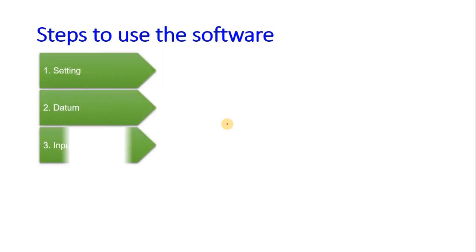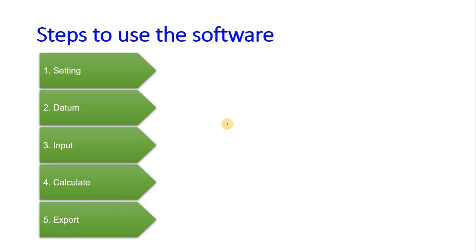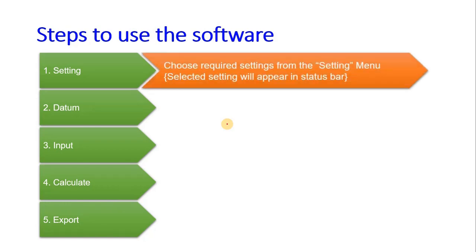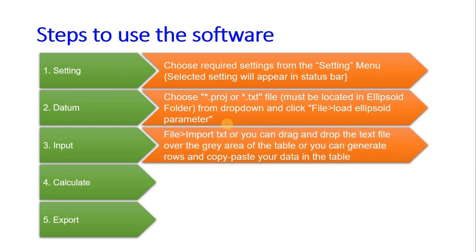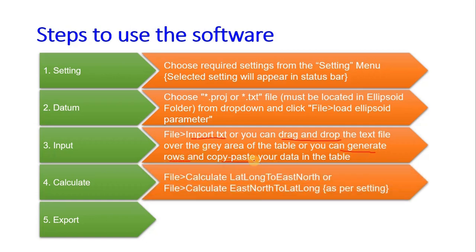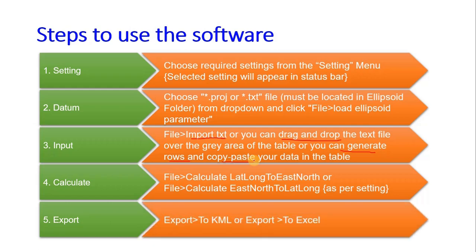The workflow is: first set the settings, then load the datum, then input, calculate, and finally export. In settings, choose the required projection file after preparing it for your location. You can input in three ways: import a TXT file, drag and drop the TXT file, or generate rows and copy-paste or manually enter data. Then calculate lat/long to easting/northing or vice versa, and export to KML and Excel. KML files can be opened in Google Earth.